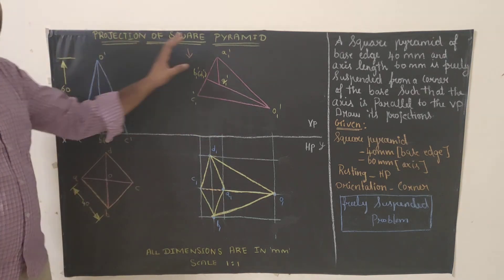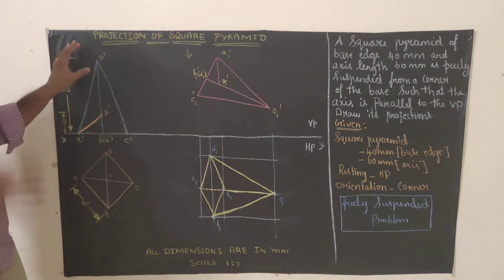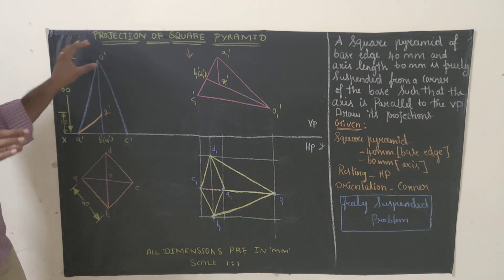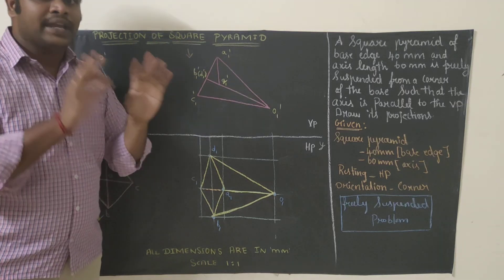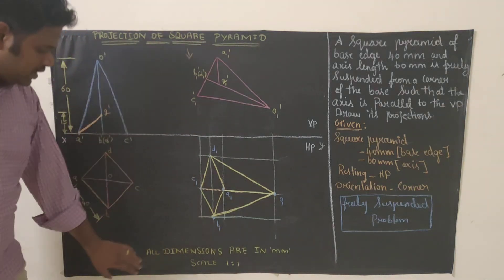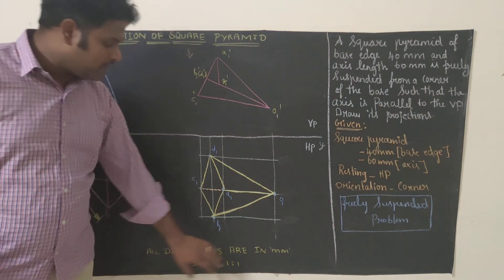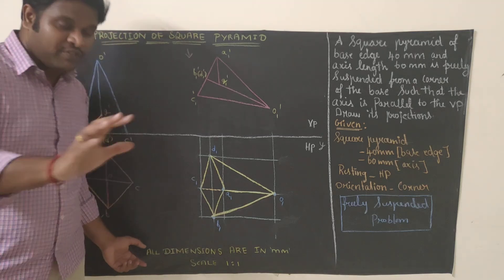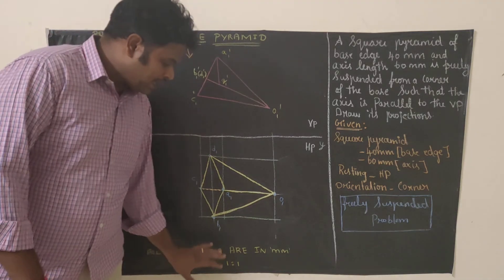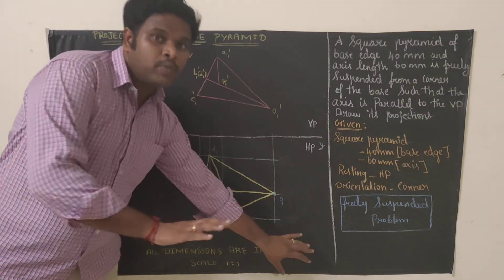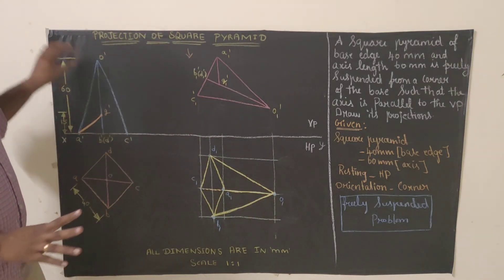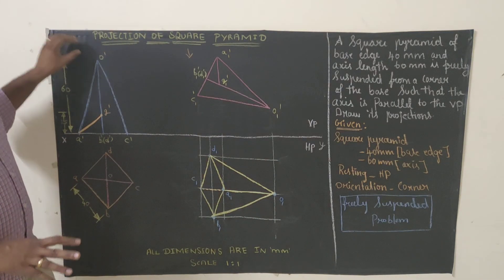The heading should read 'Projection of Square Pyramid' — text height 10mm, written in capital letters neatly. At the bottom right corner of your A3 sheet, write 'All dimensions are in mm' and 'Scale 1:1' — text height 5mm. Draw a border, add a cross circle, and write the sheet number. This is how you should present the complete diagram.